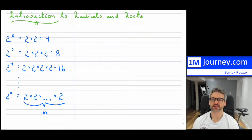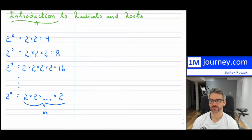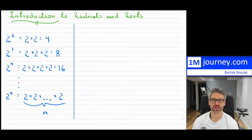On the left-hand side, you can see exponents. You have two squared — that's two times two, which equals four — then two cubed, two to the power of four, and so on up to two to the power of n, where n is just the number of times we multiply two by itself. You should know these exponent rules before jumping into radicals.